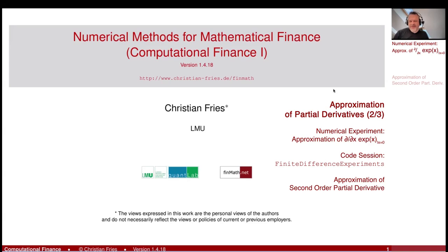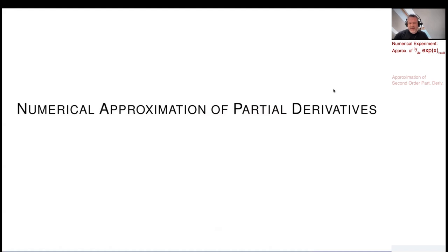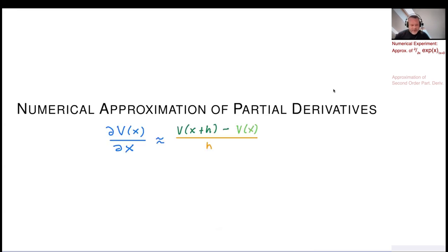Welcome to Numerical Methods. Now that we know how to approximate our partial derivative with a finite difference — for example, using the forward finite difference, which is the upshifted value minus the unshifted value divided by the shift size h.